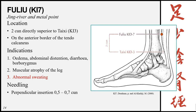Fuliu, Kidney 7, is the Jing River and Metal point of the meridian, located 2 cun directly superior to Taixi (Kidney 3) on the anterior border of the tendo calcaneus — another name for the Achilles tendon. Indications: edema, abdominal distension, diarrhea, borborygmus, and locally muscular atrophy of the leg. A special function of this point is that it can be used for abnormal sweating of any type, whether due to deficiency or excess. Needling: perpendicular 0.5 to 0.7 cun.